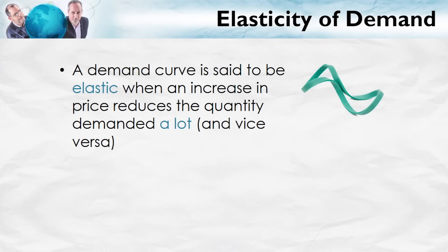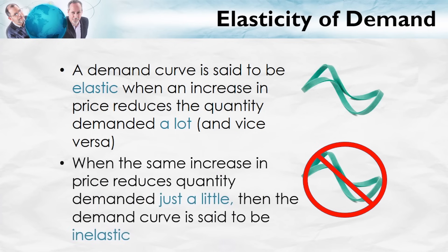A demand curve is said to be elastic when an increase in price reduces the quantity demanded by a lot, and similarly when a decrease in price increases the quantity demanded by a lot. That's an elastic curve — the quantity is changing a lot in response to the price. When the same increase in price reduces the quantity demanded just a little, or a decrease in price increases it just a little, then the demand curve is said to be inelastic. The elasticity of demand measures how responsive quantity demanded is to a change in price.